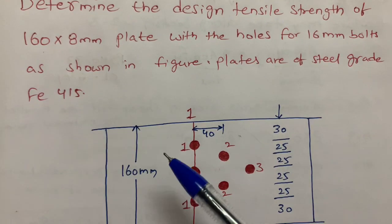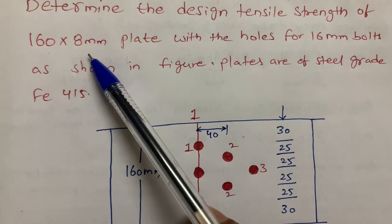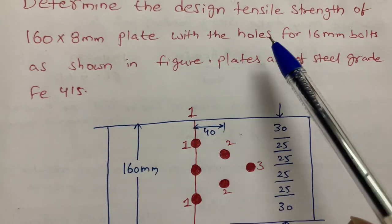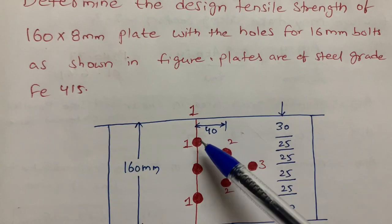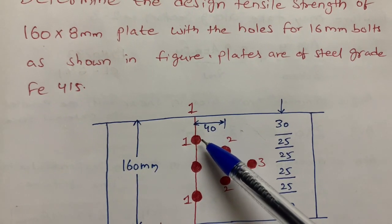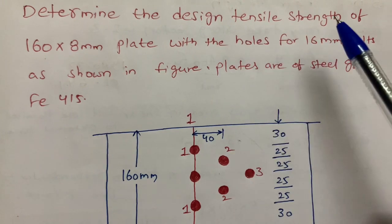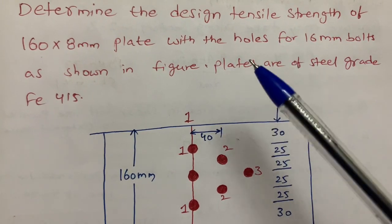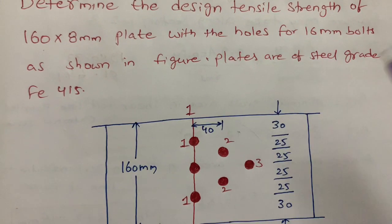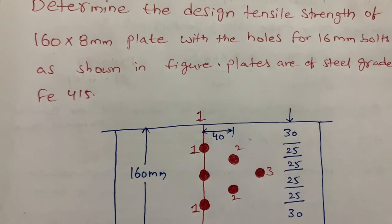The plate dimensions are 160 by 8 mm — 160 mm is the width of the plate and 8 mm is the thickness — with holes for 16 mm bolts. We need to calculate the design tensile strength of the plate.